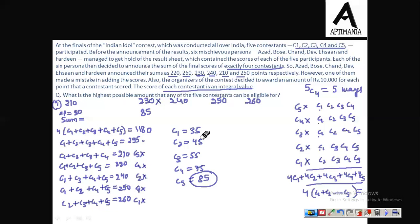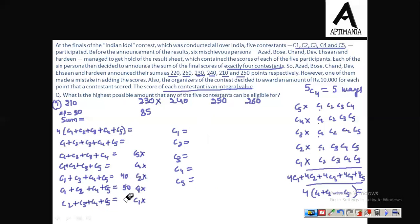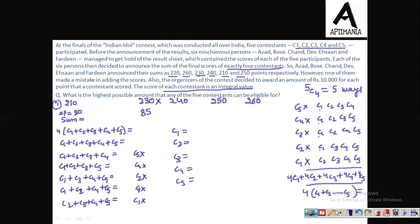Now Case 4: assume the wrong value is 240. If 240 is removed, then the total will be 220 + 260 + 230 + 210 + 250 = 1170. Now see, 1170 is again not divisible by 4, so this value is again not possible — 240 cannot be the wrong value; it has to be correct. So when 210 was wrong the highest was 80, and when 230 was wrong it was 85.